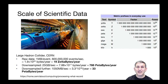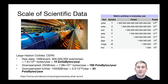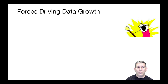Scientific data is probably the largest-scale data we have on the planet today. The Large Hadron Collider at CERN gathers 19 zettabytes of raw data per year. It down-samples to about 788 petabytes per year, which is still enormous, and then further down-samples for storage to 33 petabytes per year. The ability to generate data is really unlimited.